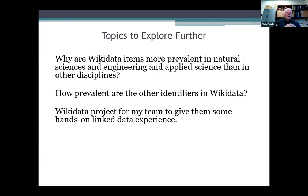Education is now in second place, but there's a reason for that — my team intervened when experimenting with creating Wikidata items, focusing on the School of Education faculty. They were sort of the Goldilocks unit: not too many, not too few, just the right amount to experiment with. If we remove them and look at the natural results without our intervention, natural sciences and applied science again predominate. I want to further investigate why Wikidata items are more prevalent in natural sciences and engineering. Wikidata has also been touted as a possible identifier hub — a place where all identifiers can be corralled into one place — and I want to know if that's really being realized.